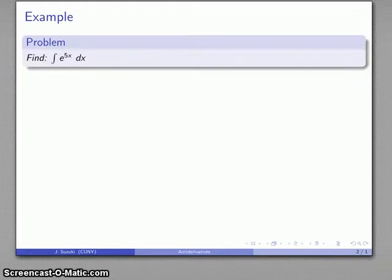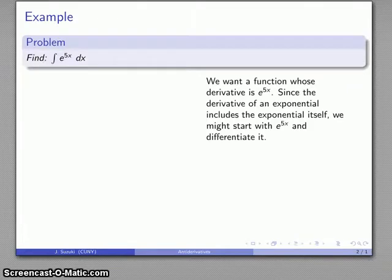Alright, how about another anti-derivative? How about e to the 5x? So we want a function whose derivative is e to the 5x. We should recognize this as an e to the function, and we know that the derivative of an e to the function is the same thing and some other stuff. So we might start out with e to the 5x and see what happens when we differentiate it.